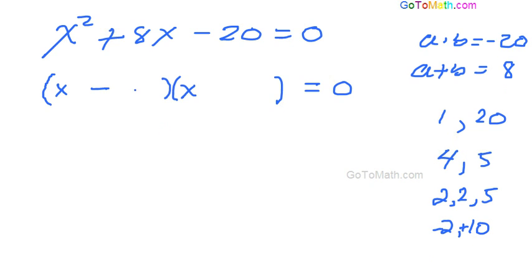Alright, so we're going to go x minus 2 and x plus 10, right? So negative 2 times 10 is negative 20. And then, of course, if you said x times 10 and then minus 2x, that would give us 8x. Okay, so there you go. It's factored.